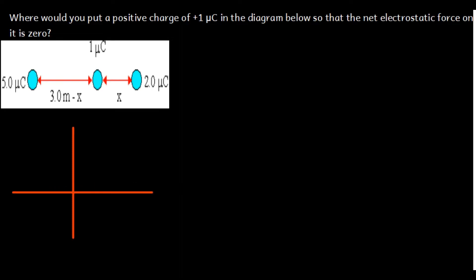We have the first one: if I have 1 microcoulomb and 2 microcoulomb, these are both positive. What we expect is they are going to repel each other. This charge is going to be repelled and move in this direction. That's where we are going to have the force on charge A due to charge 2 — so it's going to be F₂₁.